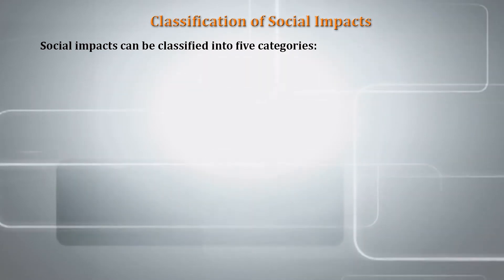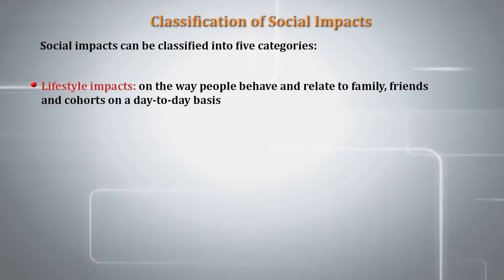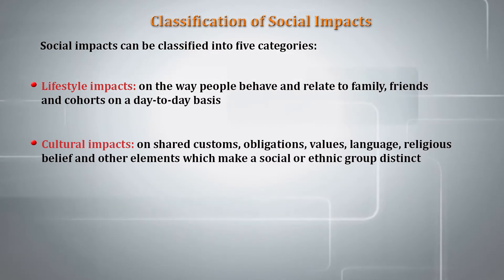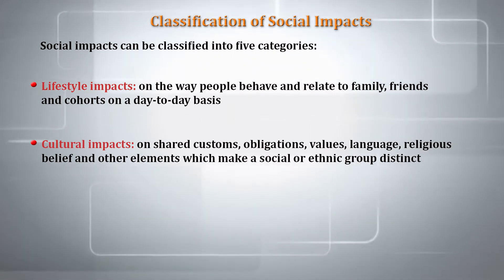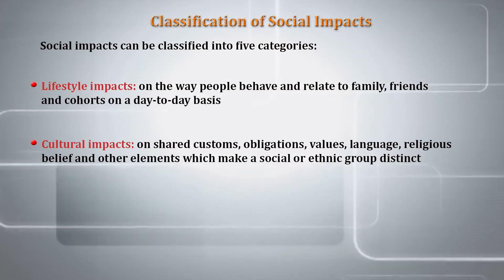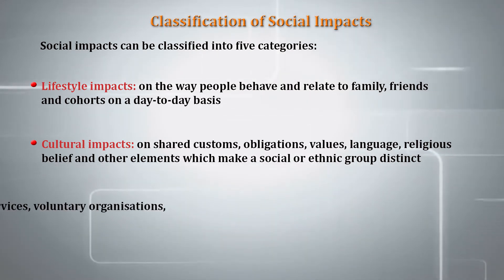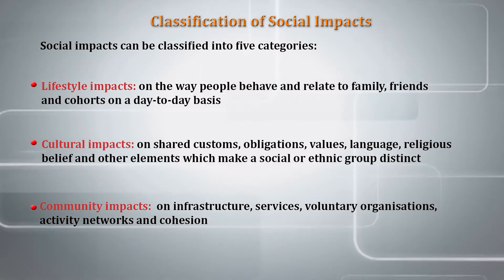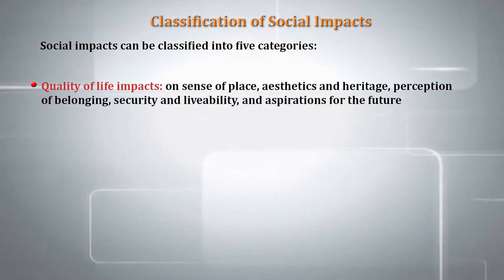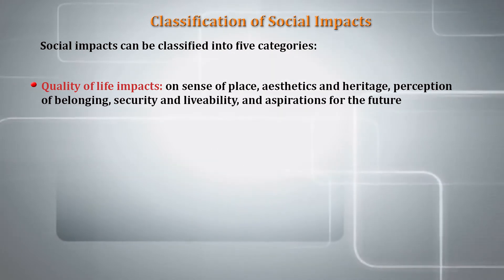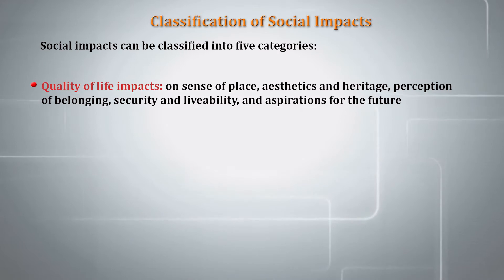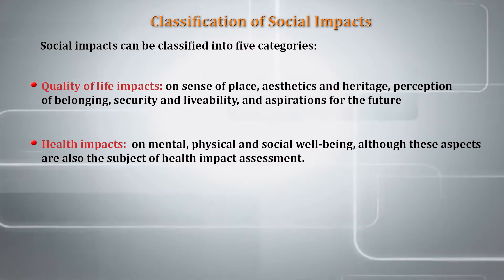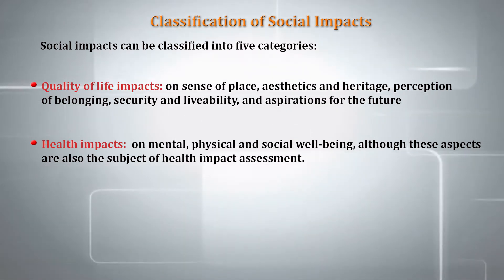Social impacts can be classified into five categories. Lifestyle impacts on the way people behave and relate to family, friends and cohorts on a day-to-day basis. Cultural impacts on shared customs, obligations, values, language, religious belief and other elements which make a social or ethnic group distinct. Community impacts on infrastructure, services, voluntary organizations, activity networks and cohesion. Quality of life impacts on sense of place, aesthetics and heritage, perception of belonging, security and livability, and aspirations for the future. Health impacts on mental, physical and social well-being, although these aspects are also the subject of health impact assessment.